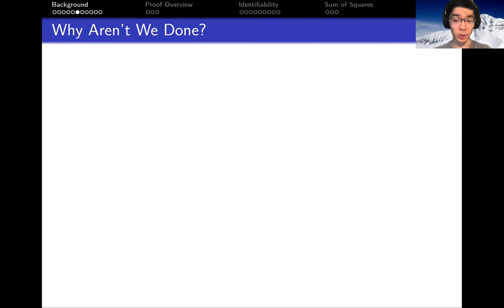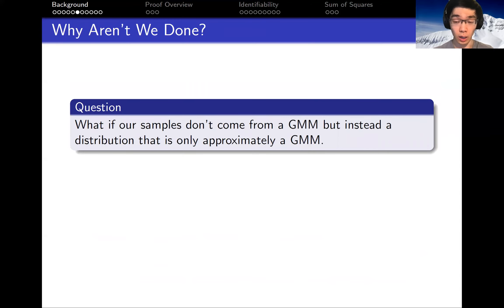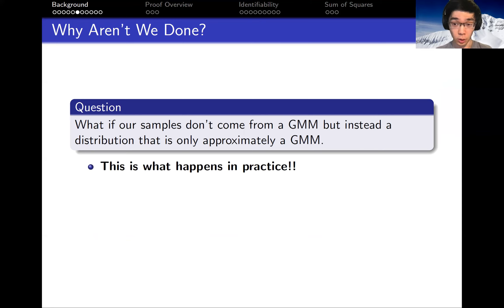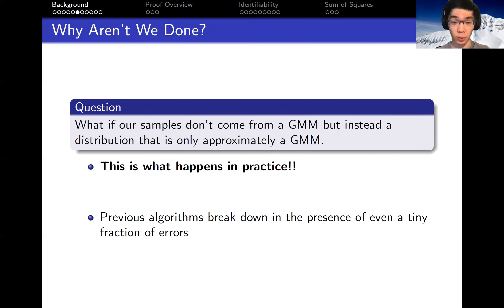So now we know how to learn the parameters of a mixture of Gaussians — so we're done, right? Well, it turns out that in practice the setting is a little different. We generally don't believe our samples come from a distribution that is exactly a GMM; instead the distribution is only well approximated by a GMM. The previous algorithms break down even in the presence of a tiny fraction of errors, or if the true distribution is even slightly different from exactly a GMM.